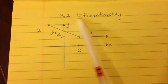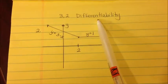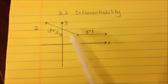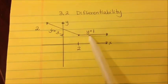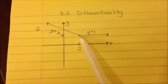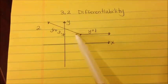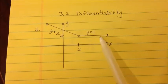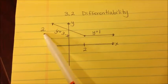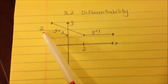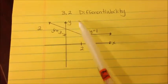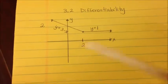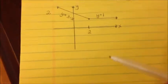This is the lesson on 3.2 differentiability. We're trying to figure out if a function is differentiable at x equals 2, where two equations meet. The left-hand side is y equals 3 minus x, and the second one is y equals 1. I'm going to walk you through problem number 2, which is similar to homework problem number 2.